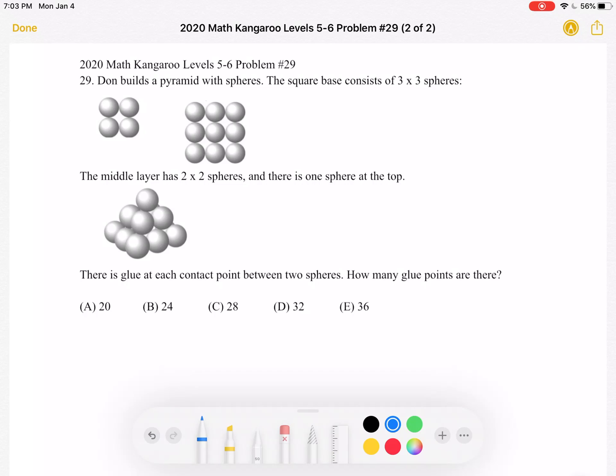So we're trying to find the total number of contact points between the spheres. We can divide the contact points into two general groups, the ones that hold it together vertically.